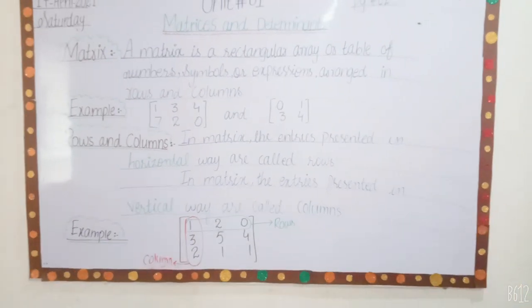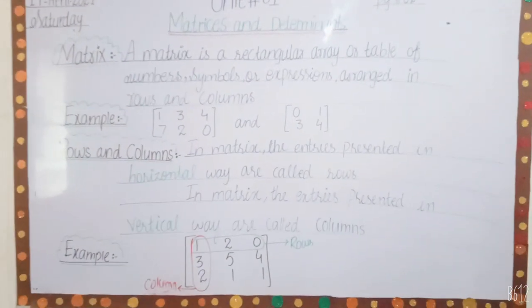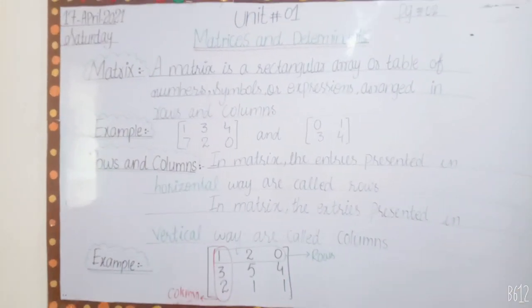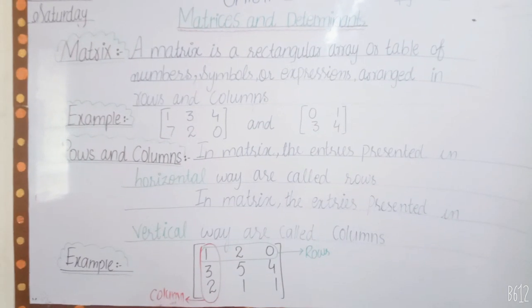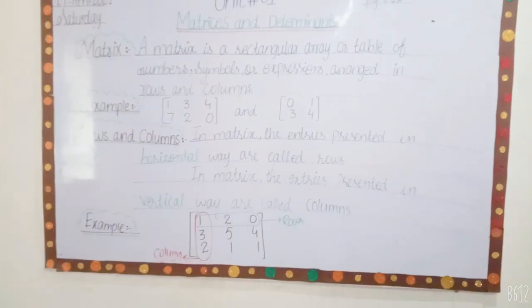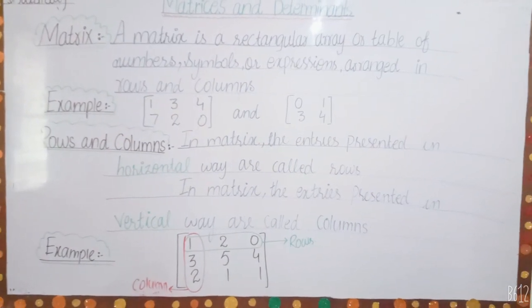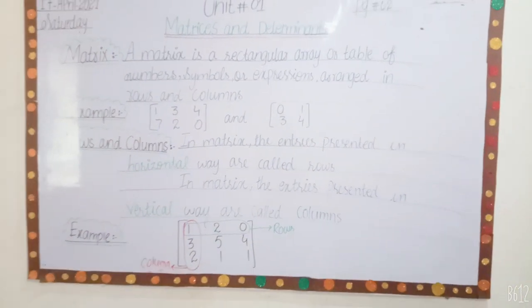For example: one, two, zero. Horizontal way - we have a horizontal way like copy page lines, horizontal way. We have horizontal.